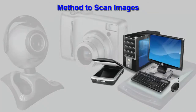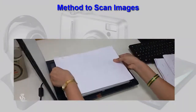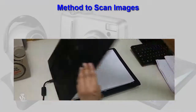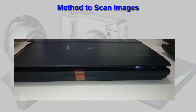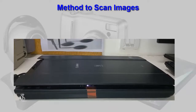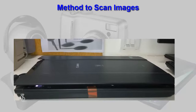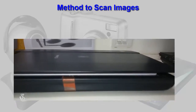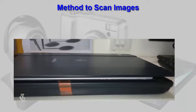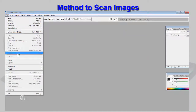Connect the scanner to a computer and switch it on. Keep the picture to be scanned on the glass panel inside the scanner, facing downwards, and close the cover. The tube inside the glass panel moves from back to the front. Do not open the cover while scanning is in process, as that can spoil the scan. In Adobe Photoshop, go to Import in the File menu and select the scanner's name.